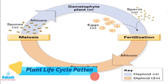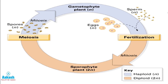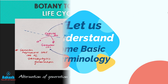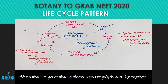Before we begin with the different types of life cycle patterns that we can see in plants, we need to understand some basic terminology and the overall life cycle concept. When the plant body is made up of haploid cells, it is called the gametophyte, while when it is made up of diploid cells it is known as the sporophyte. The life cycle of sexually reproducing plants goes from gametophytic stage to sporophytic stage and back to gametophytic stage — this pattern is known as alternation of generation, where the gametophyte alternates with the sporophyte.